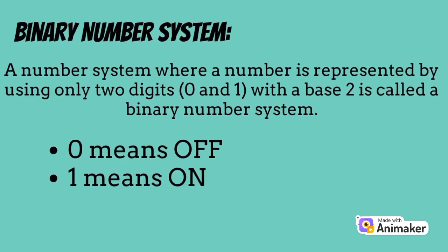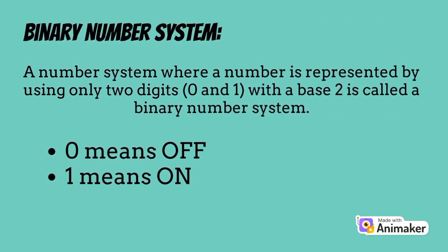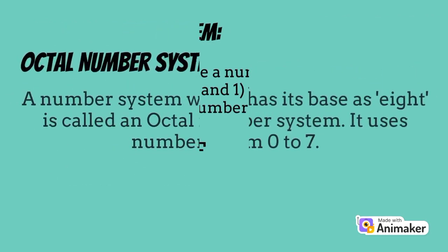Binary number system. A number system where a number is represented by using only two digits — 0 and 1 — with a base of 2 is called a binary number system. Zero means off and 1 means on.